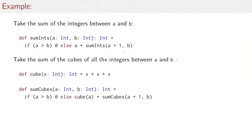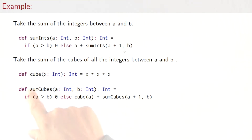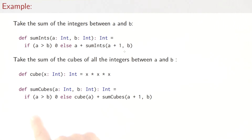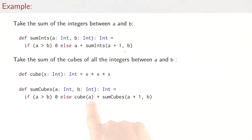Otherwise we would return a plus a recursive call of sum ints of a plus one and b. Now let's vary the problem a little bit and consider taking the sum of the cubes of all integers between a and b. Here's the cube function: take an x, return x times x times x. Sum cubes is the same as sum ints, but where we used a before, now we return cube of a, with a recursive call to sum cubes.